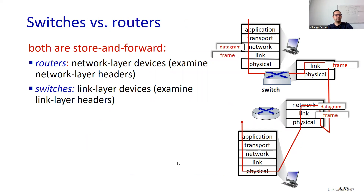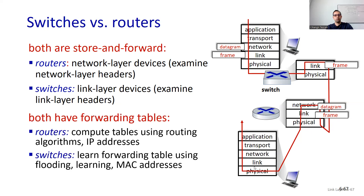Switches versus routers: both are store-and-forward. Routers are network-layer devices that examine network-layer headers and don't deal with upper layers. Switches work at the link layer; routers also work at the network layer. Both have forwarding tables, but routers compute tables using routing algorithms and IP addresses, while switches learn forwarding tables using flooding and MAC addresses — that is the key difference.